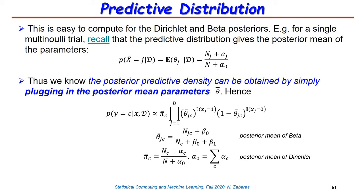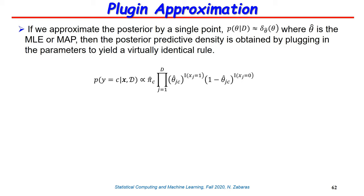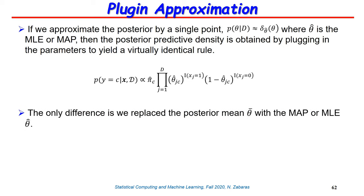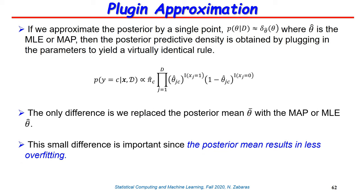Other plug-in approximations such as the MLE or MAP estimate can be used, but the posterior mean is the only one that avoids overfitting and works properly in the uninformed limit. This is add-1 smoothing: even if the count for feature j in class c is zero, the model will not predict zero probability for theta_jc.